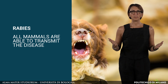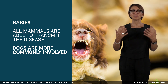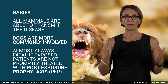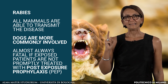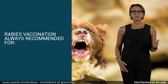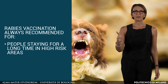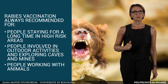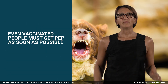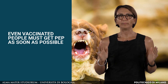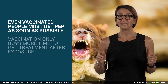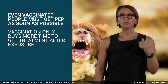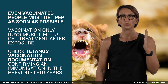All mammals are able to transmit rabies, but dogs are more commonly involved in the transmission of the disease, thus responsible for most rabies deaths. Rabies is almost always fatal if exposed patients are not promptly treated with rabies post-exposure prophylaxis (PEP), but in some countries it may not be available. Rabies vaccination is always recommended for people staying for a long time in high-risk areas, people involved in outdoor activities and exploring caves and mines, people working with animals, and children who tend to play with animals. Even vaccinated people must get PEP as soon as possible if they have been exposed to animals that might have rabies, as vaccination only buys more time to get treatment after exposure. In case of a bite, it is also important to check tetanus vaccination confirming immunization in the previous 5–10 years.